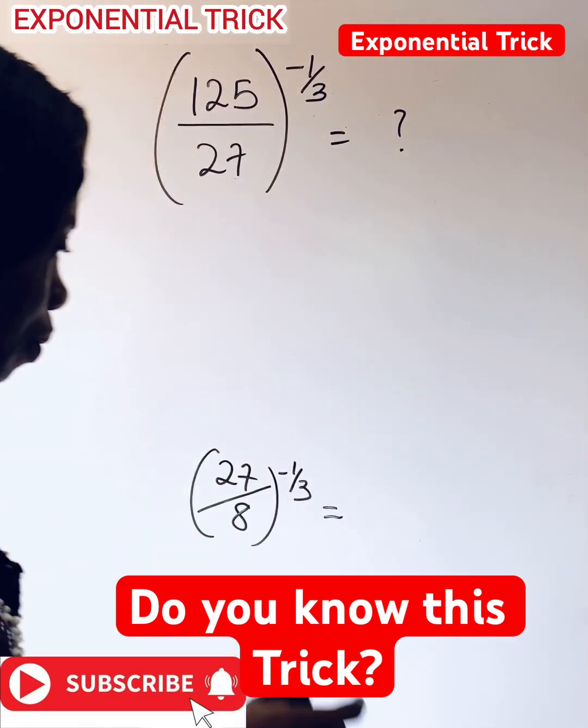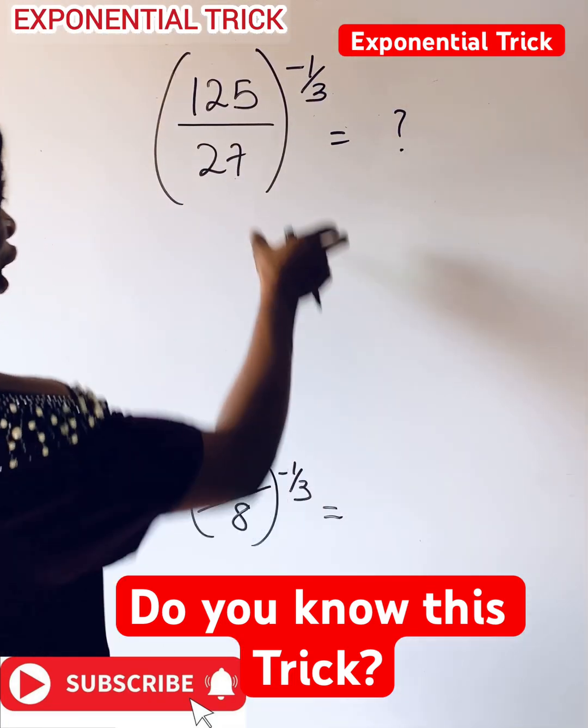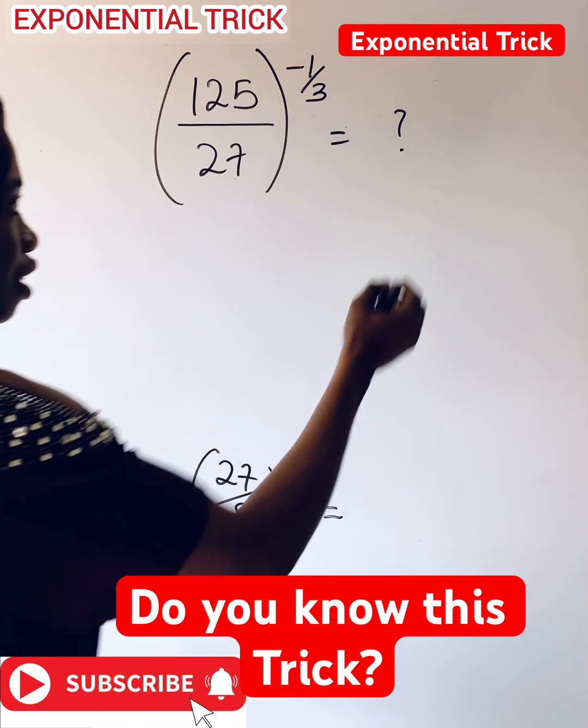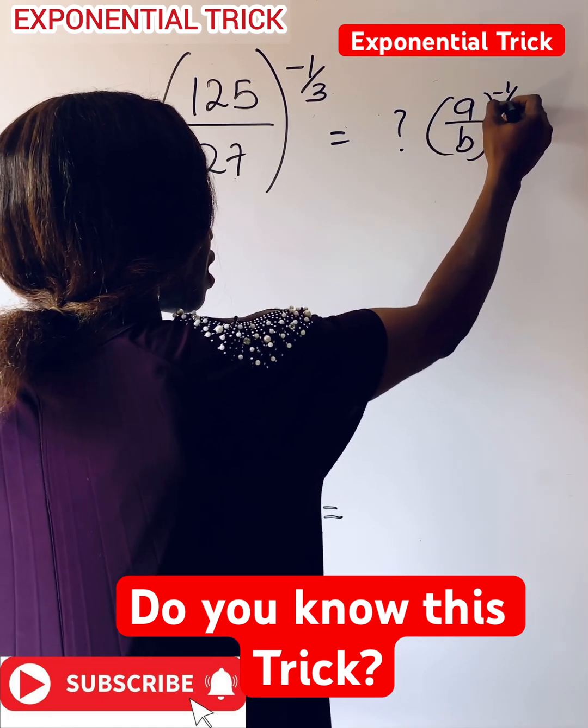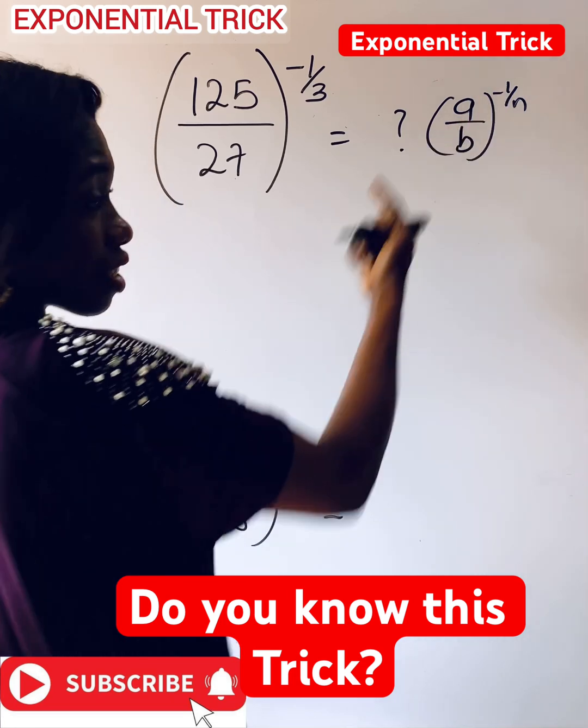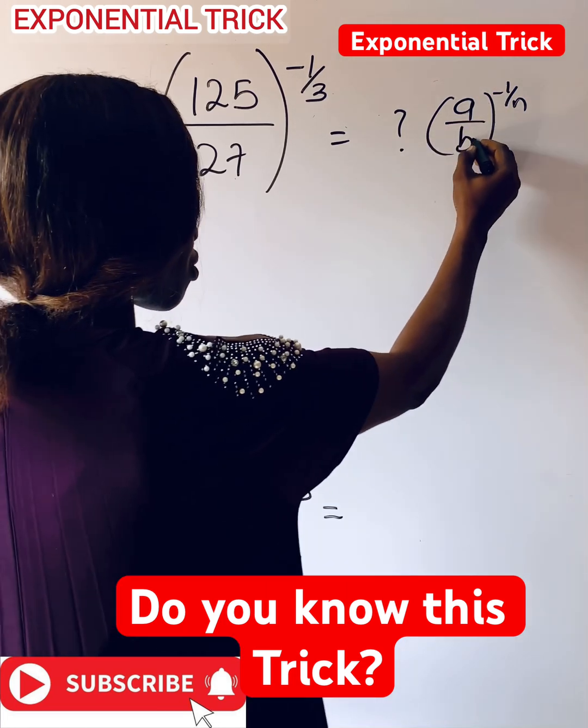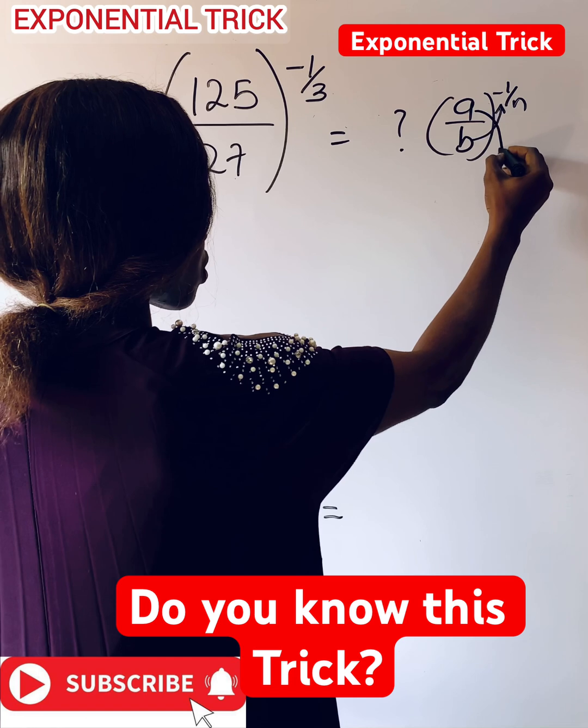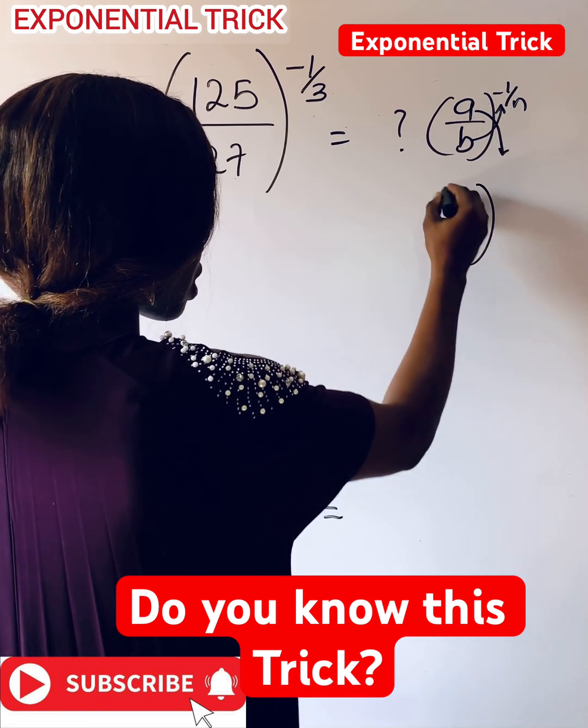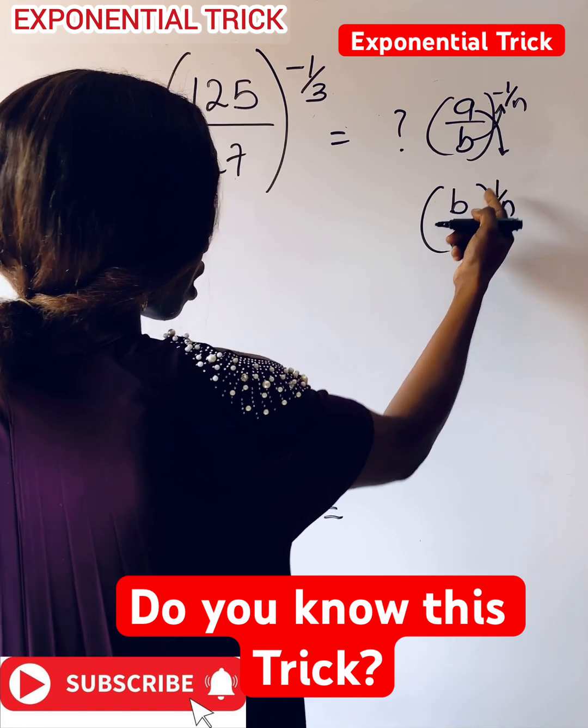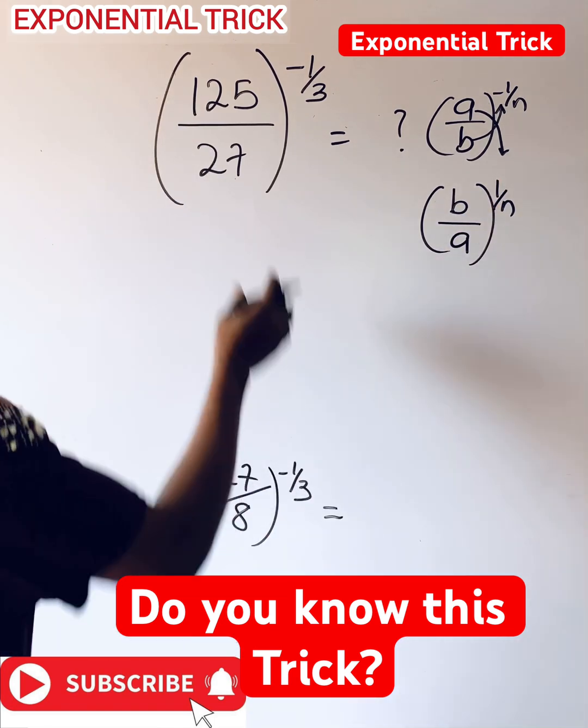Let me teach you this trick to help you answer this. Now look at what you have. Each time you have this, it means if you remember this, if you want to remove this negative sign, just reverse this. This will go up, this goes down. So if you do that, you are going to have b over a, then raised to power of one over n. The minus sign goes off.